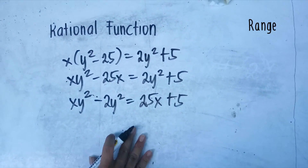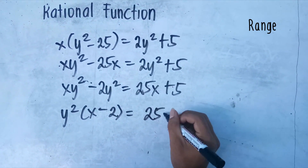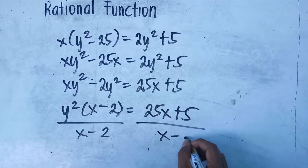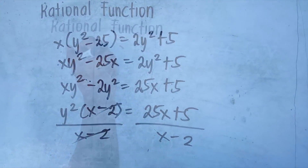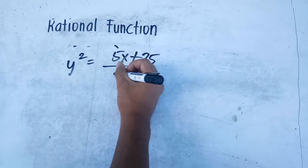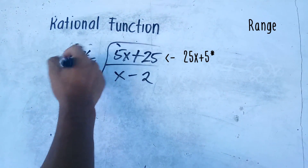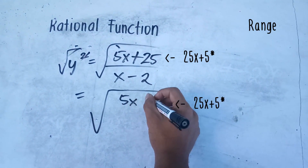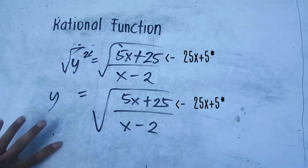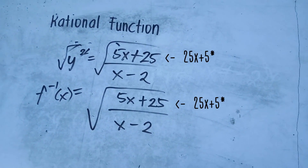We factor out y on the left side of the equation, then divide both sides by x minus 2 to cancel x minus 2. This gives us y squared equals 5x plus 25 over x minus 2. We then extract the square root of both sides to cancel the squared on y. Therefore, the inverse of the given function is the square root of 5x plus 25 over x minus 2.